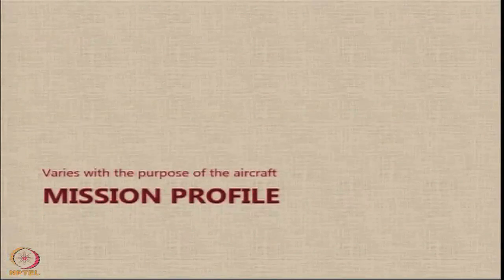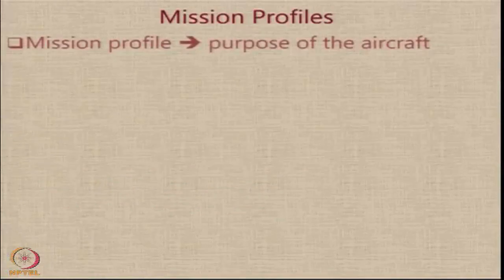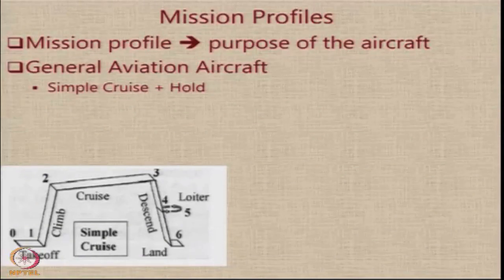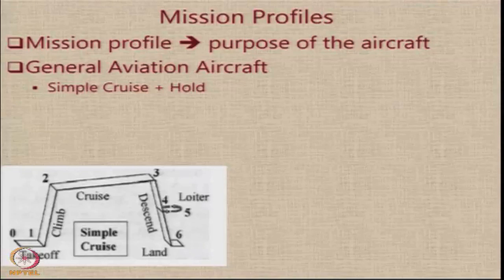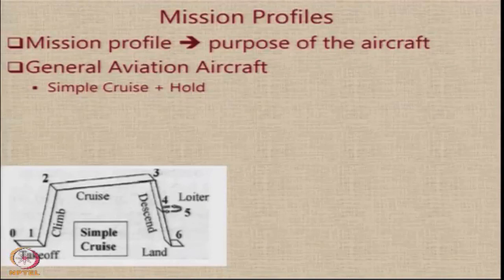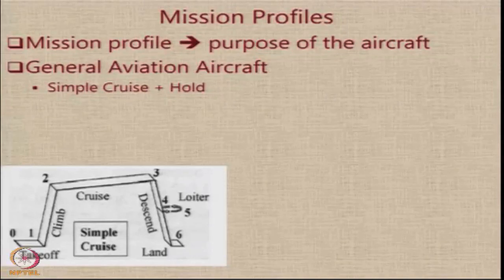Mission profile varies with the purpose of the aircraft. Let us look at some standard mission profiles. For a simple general aviation aircraft, the mission profile is very straightforward: you take off, climb to altitude, cruise, and then descend. When you descend, you may be forced to loiter for some time because the runway is not available to you. This requirement of loiter is normally specified by the airworthiness agencies — we call it a hold. And then once you are cleared to land, you proceed with the descent and landing.